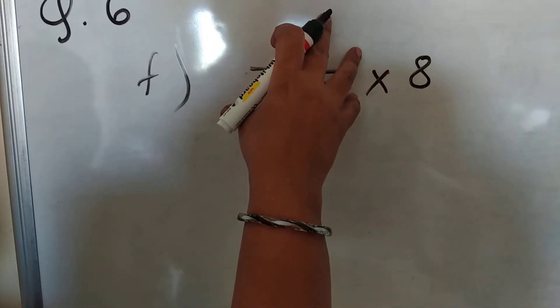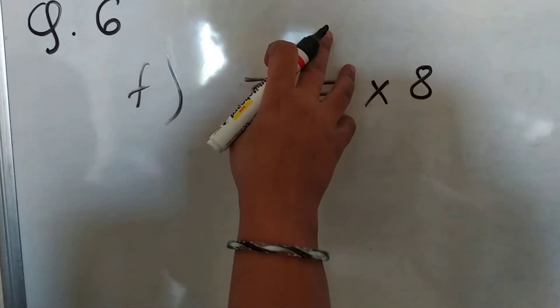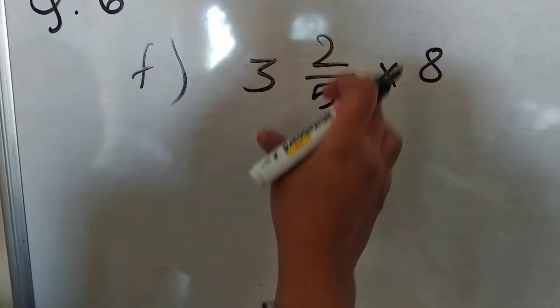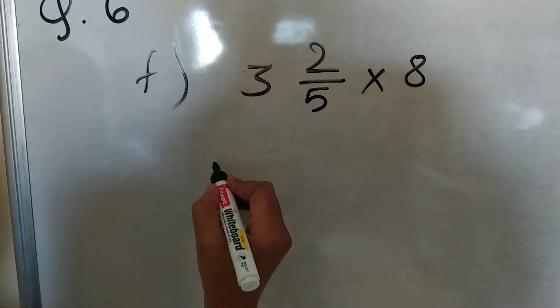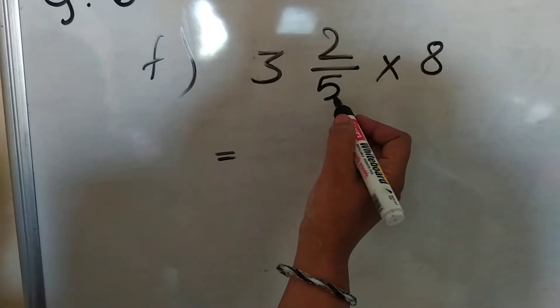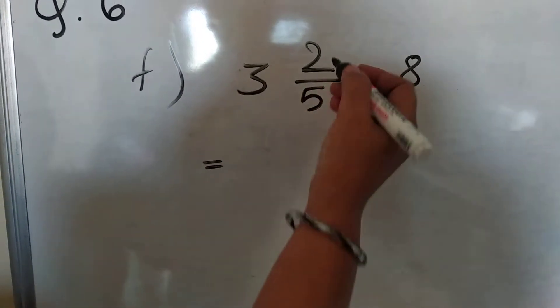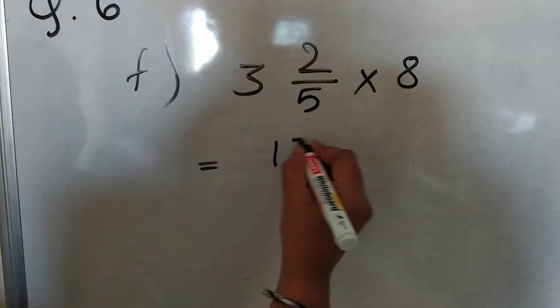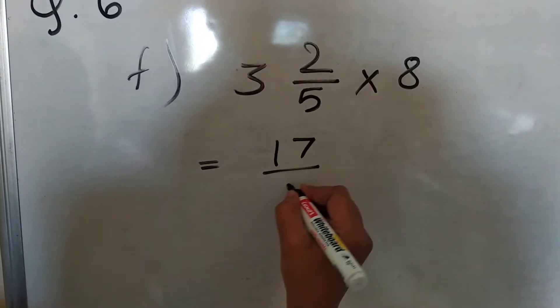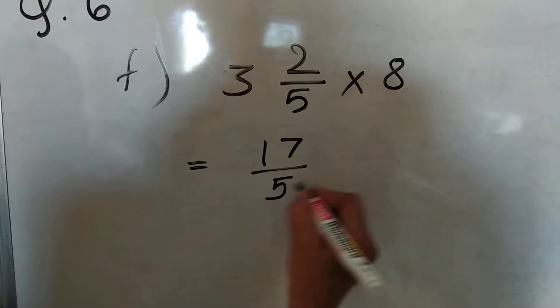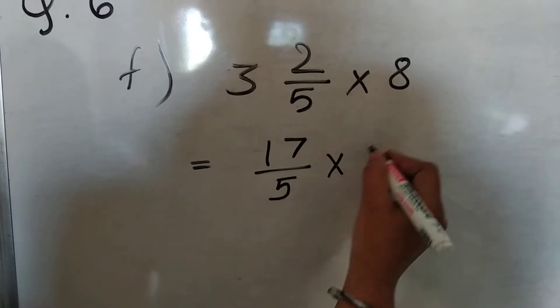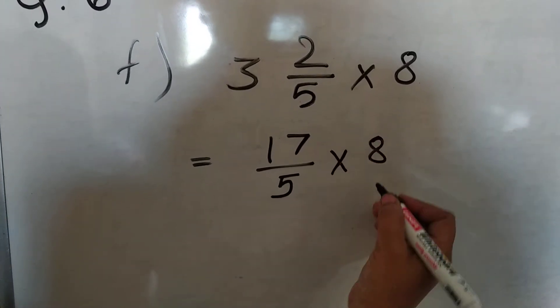Here the first mixed number is given. We have to convert this mixed number into an improper fraction. 5 and 3 is 15, plus 2 is 17. So we get 17 upon 5, multiplied by 8.